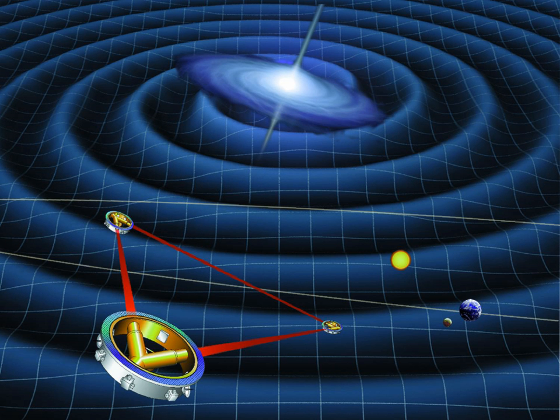In February 2016, the Advanced LIGO project announced that it had directly detected gravitational waves from a black hole merger. Observing gravitational waves requires two things: a strong source of gravitational waves, such as the merger of two black holes, and extremely high detection sensitivity.